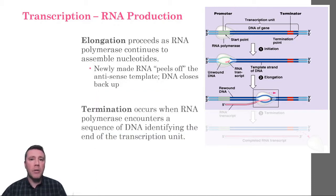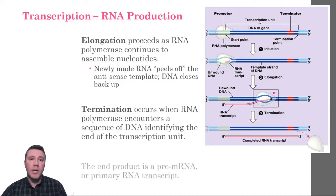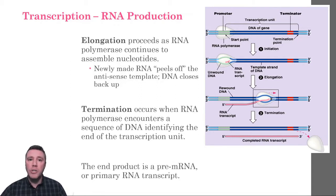Elongation continues until RNA polymerase encounters a terminator sequence in the DNA. The terminator sequence signals to RNA polymerase to ultimately detach from the DNA molecule. In prokaryotes, the product of transcription is ready to proceed to the next stage of gene expression — translation. However, in eukaryotes, the product of gene transcription is a pre-messenger RNA, or primary transcript, which must first be modified before it can proceed to the translation stage of protein synthesis.